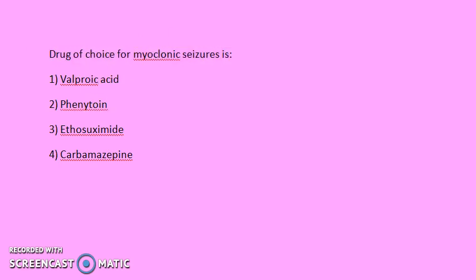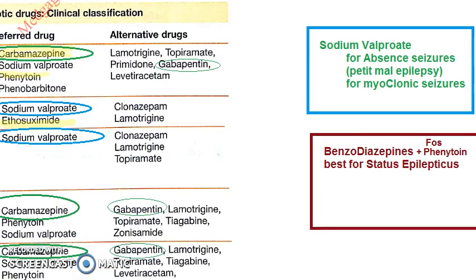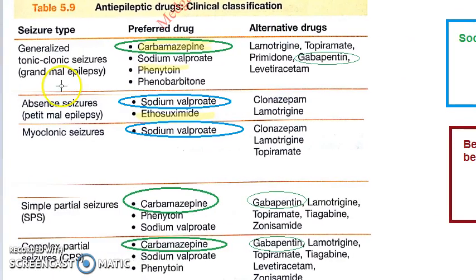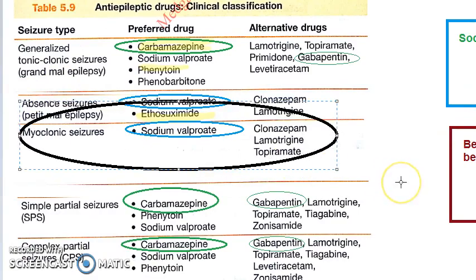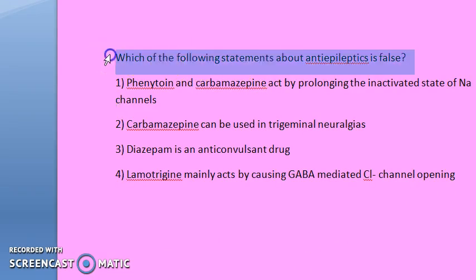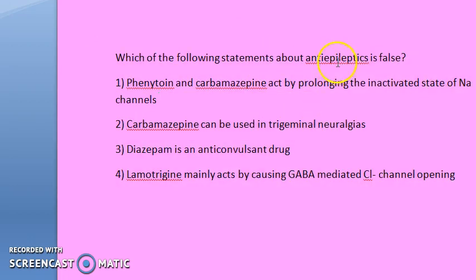Seventh question: drug of choice for myoclonic seizures. Focus on the word myoclonic seizures. As seen in prior data, for myoclonic seizures it is sodium valproate. So the answer is valproic acid, which is a carboxylic acid derivative.